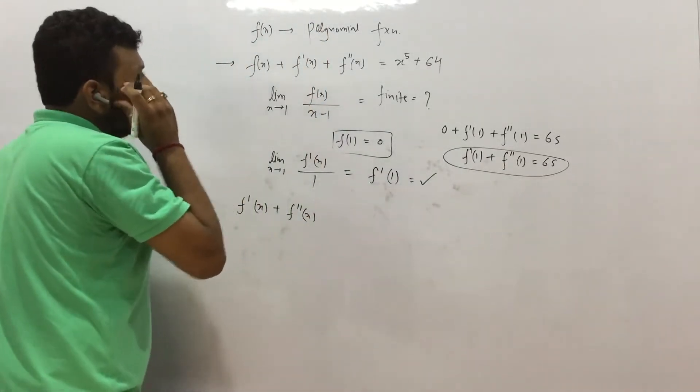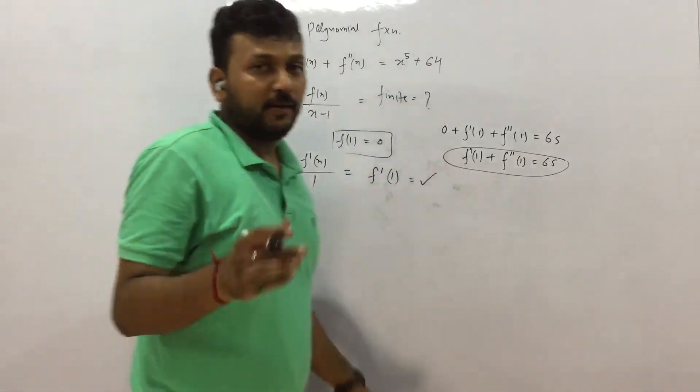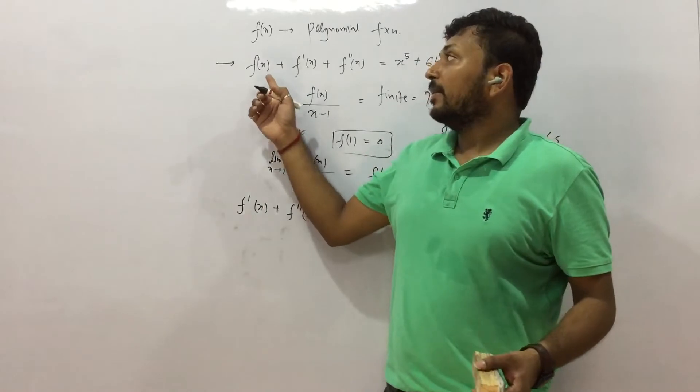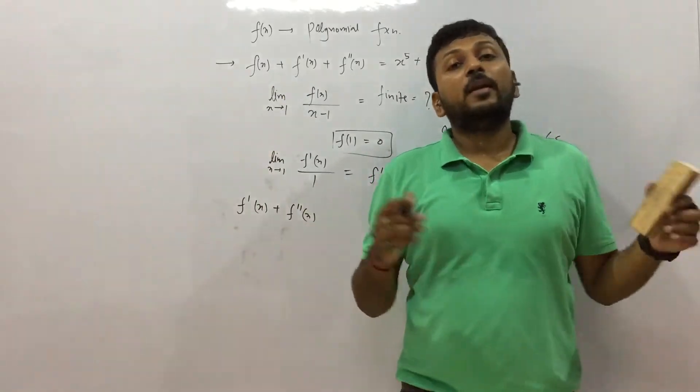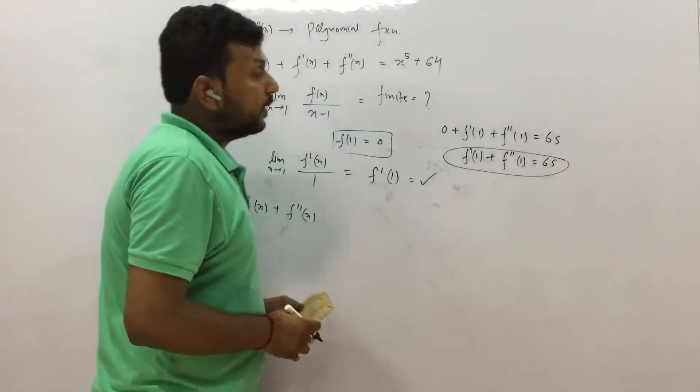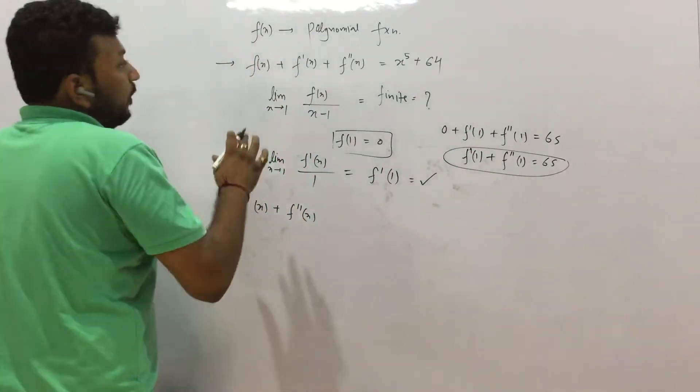What we can do? We can also put 1 in the equation. So we have f(1) which is 0 plus f'(1) + f''(1) = 65. So f'(1) + f''(1) = 65. This is another thing that we know from the equation. We need to eliminate this. Once we eliminate this, we have the answer because this is the answer.